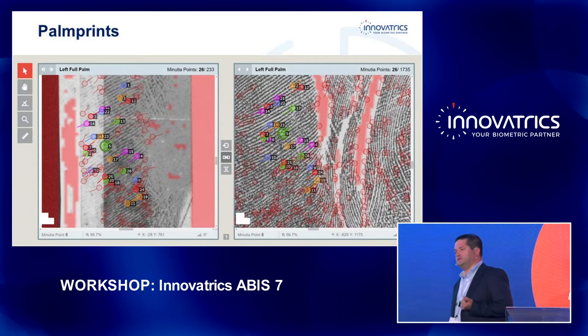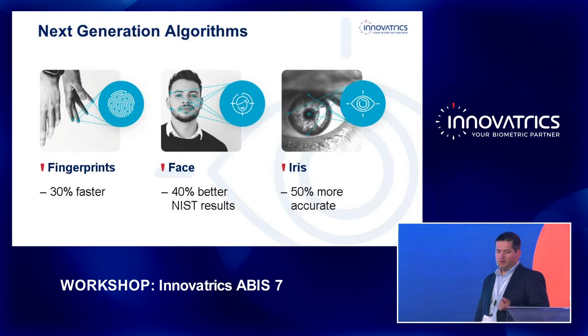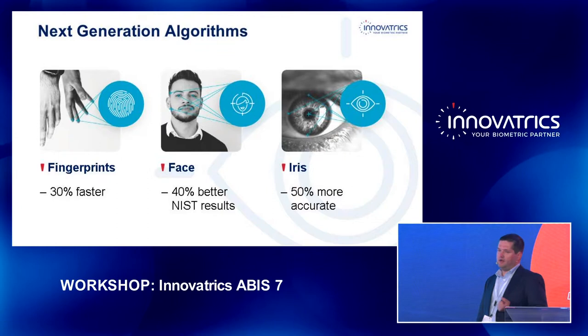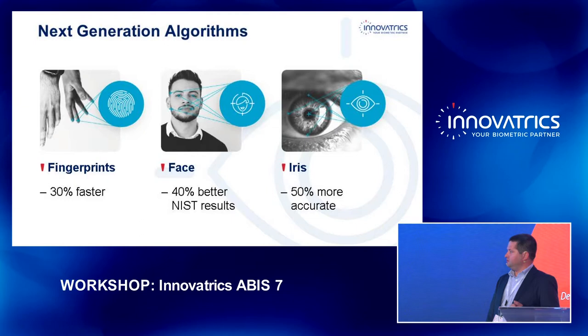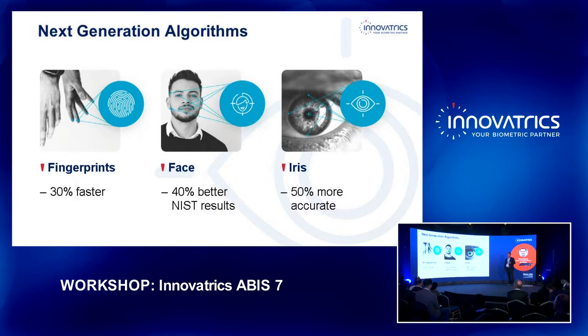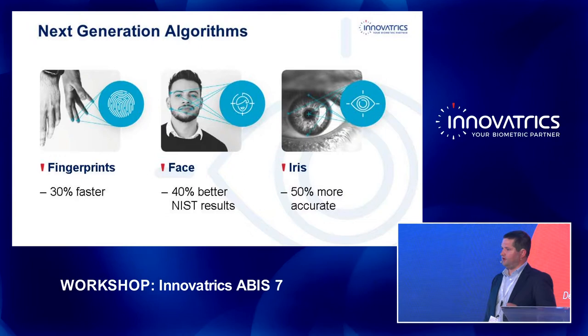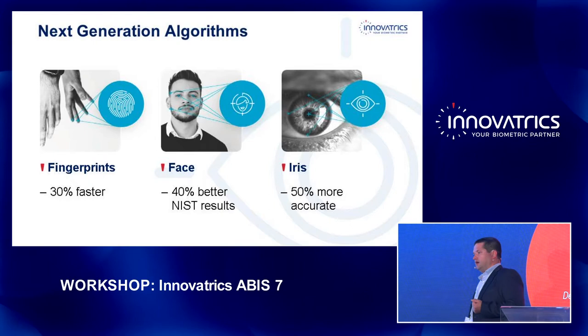On top of this, we also provide SDKs so that palm prints can be processed in our IDKit SDK. We are not only adding new features but also innovating the core of our ABIS — our matching algorithms. With generation 7, we are able to match fingerprints 30% faster than version 6 with the same accuracy. For face matching, we have 40% lower error rates, and Iris was also improved by 50%.